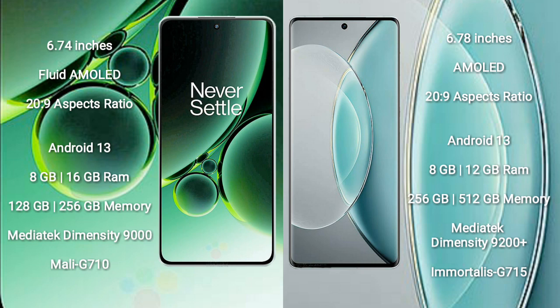OnePlus Nord 3 runs on the Android 13 operating system, comes with 8GB or 16GB RAM, 128GB or 256GB internal storage, MediaTek Dimensity 9000 processor, and GPU Mali-G710.